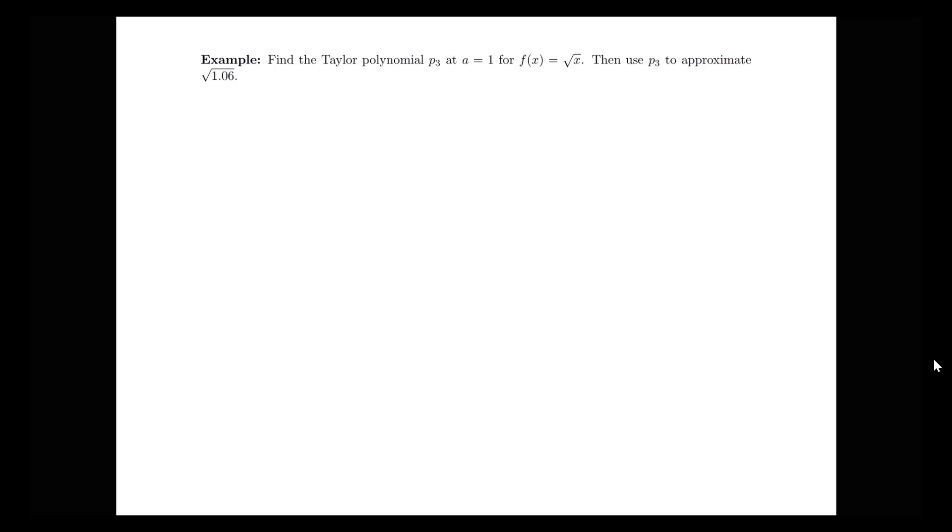We're trying to find our third order approximation, so we know that P3 of x, the third order Taylor polynomial centered at a equals 1, would be equal to f(1) plus f'(1) times (x-1) plus the second derivative at 1 times (x-1)² over 2 factorial plus the third derivative at 1 times (x-1)³ over 3 factorial. The main computation we have to do is find the derivatives of our function, the first, second and third derivatives, and then find the value of those derivatives at 1 to plug them into this formula.